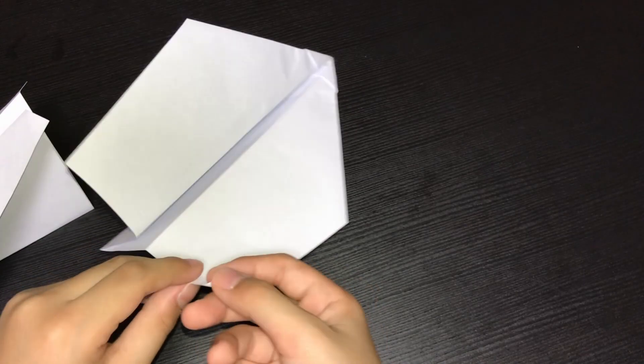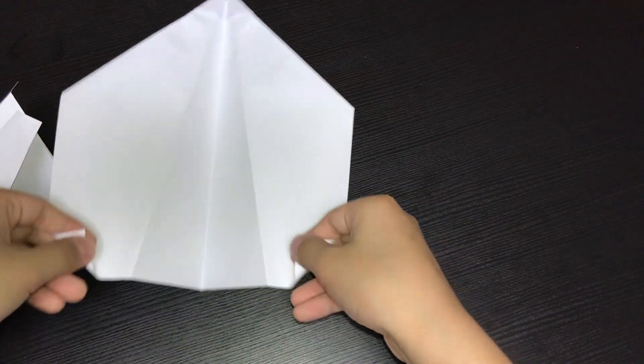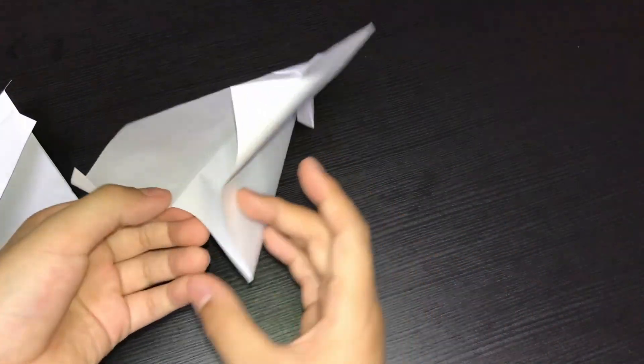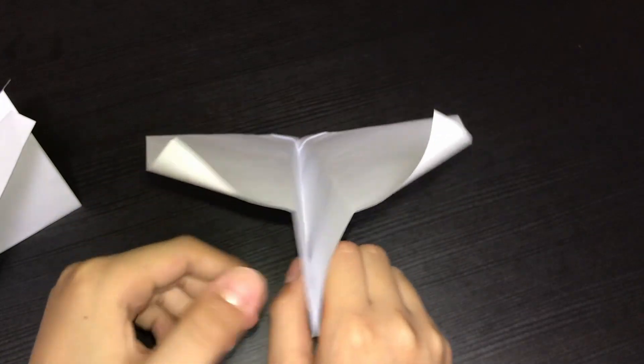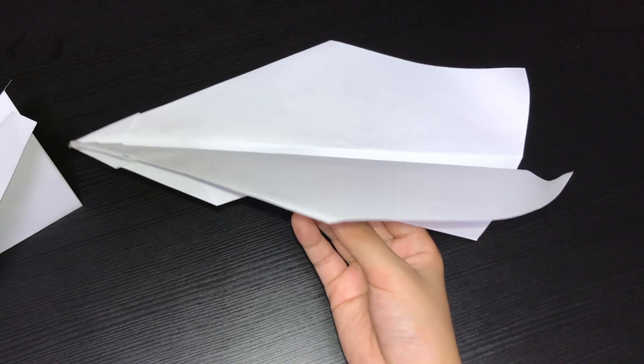You can kind of curve it around. Curve it like this. And I always used to flip the silver back again. It's kind of curved. And I'm going to use this curve so that the air makes it go further.